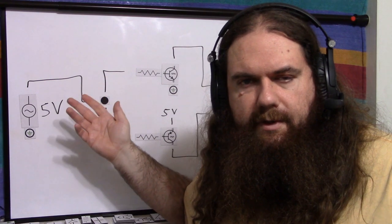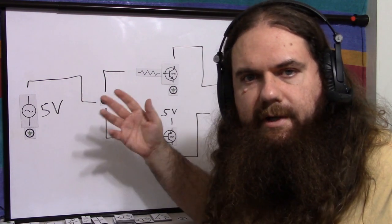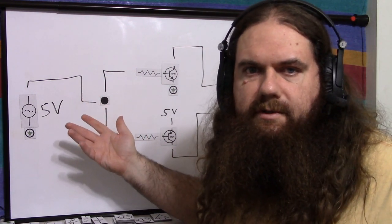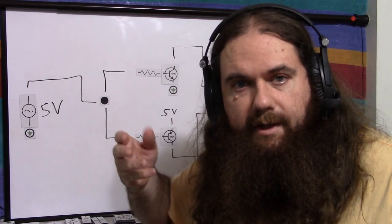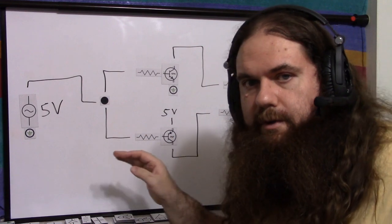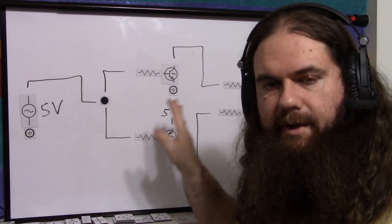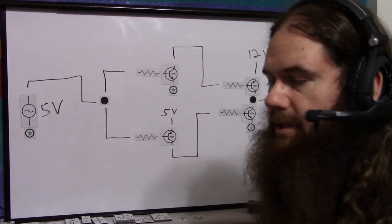So I actually thought up about three or four different ways to do this, but every single one of them used four transistors. I could not figure out a way to do it with fewer than four transistors. If you can, that's great. Let me know. But if I'm using four transistors anyway, I may as well do the lovely, symmetrical, easy thing, which is this.